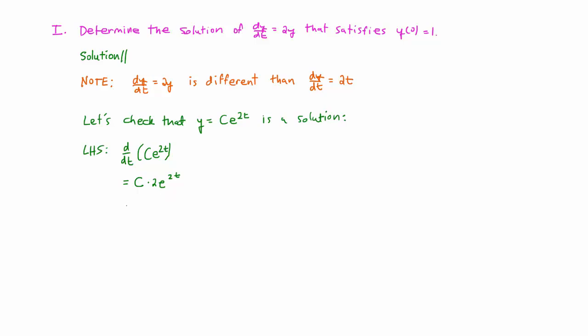Substituting into the right-hand side, we get 2 times y, which is c e to the 2t, and that's equal to c times 2 e to the 2t, and so the left-hand side and the right-hand side are in fact equal, and our function y is indeed a solution.